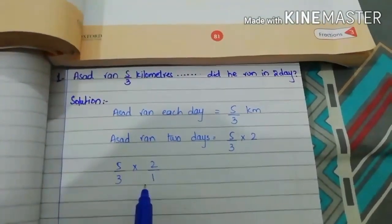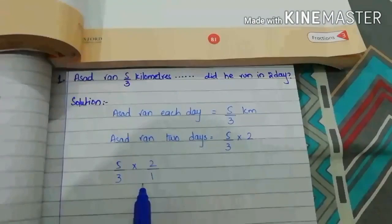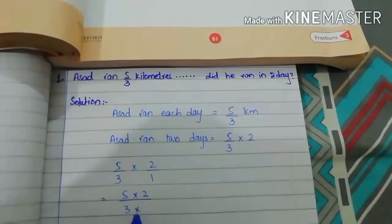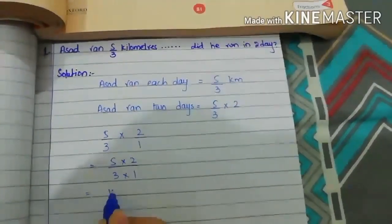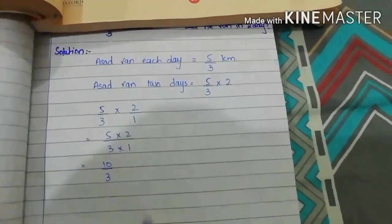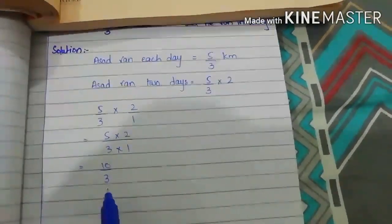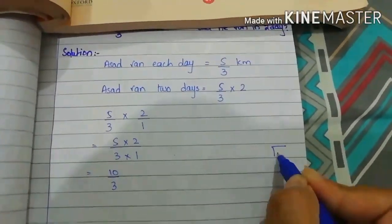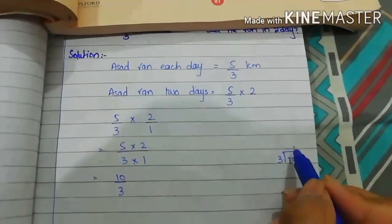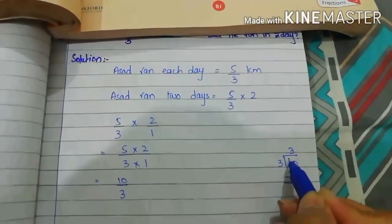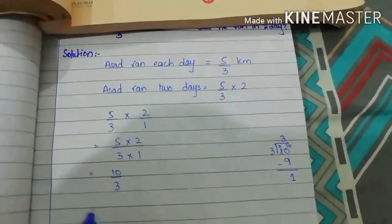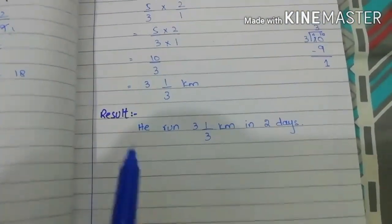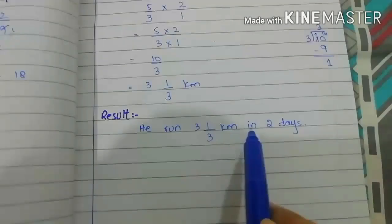There is no common factor between numerator and denominator, so we multiply numerators and denominators. 5 multiplied by 2 is 10, and 3 multiplied by 1 is 3, giving 10/3. This is an improper fraction, so we convert it to a mixed fraction: 10 divided by 3 equals 3 remainder 1. So the answer is 3 whole 1/3 kilometers in 2 days.